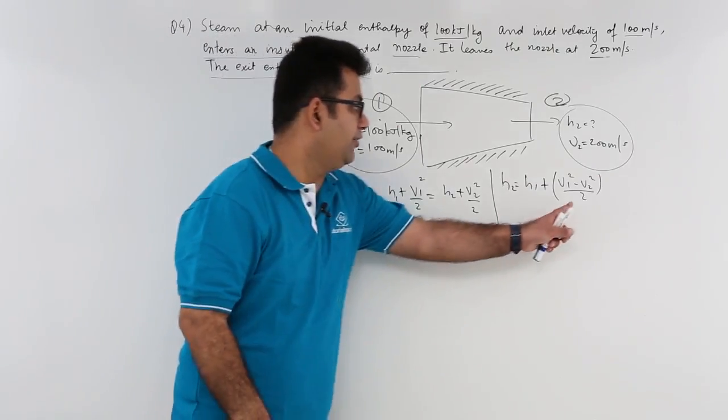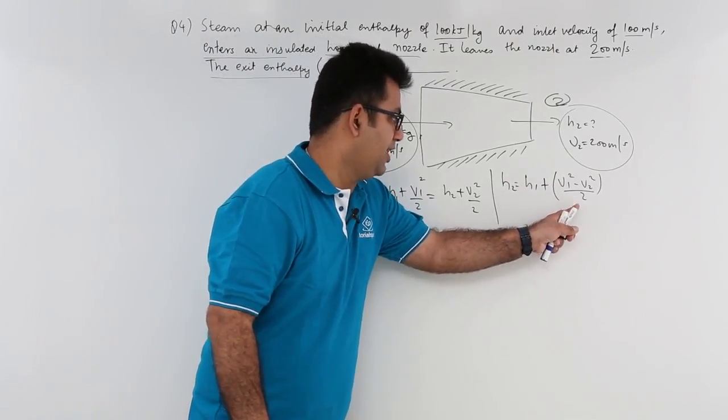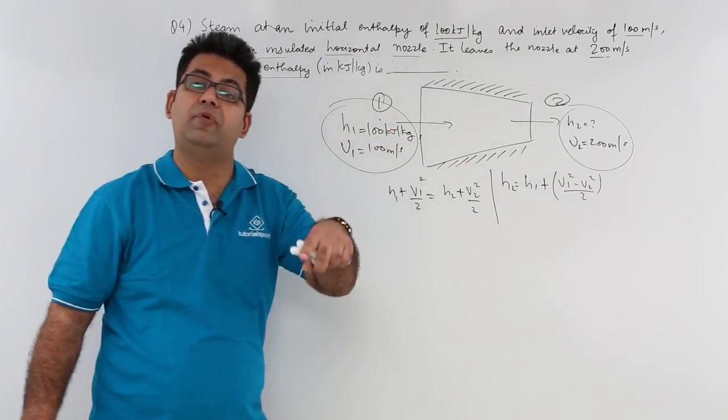So you can see that this would be a negative quantity that would be subtracted from H1. So your enthalpy would decrease.